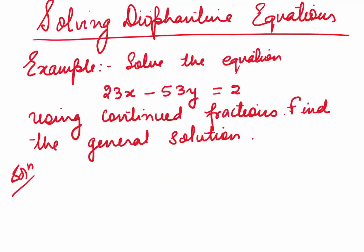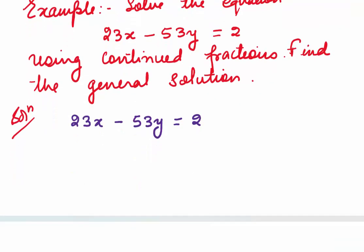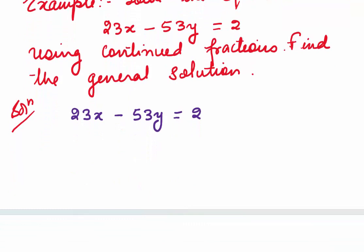Coming to solving Diophantine equations using continued fractions, I will explain this using an example. Solve the equation 23x - 53y = 2 using continued fractions. Find the general solution. Here we are given the equation 23x - 53y = 2.